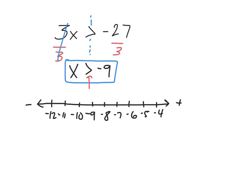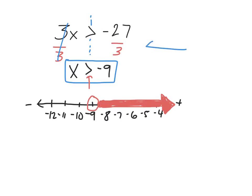We look at the inequality, which is a greater than symbol. I put an open circle at negative 9, which is my boundary number — I don't fill it in because it's not greater than or equal to, it's just greater than. Negative 9 itself is not a solution because it's not bigger than negative 9. Then I make an arrow shaded over the number line above all the solutions that work: negative 8, negative 7, negative 6, negative 5, negative 4, and all numbers bigger than negative 9.